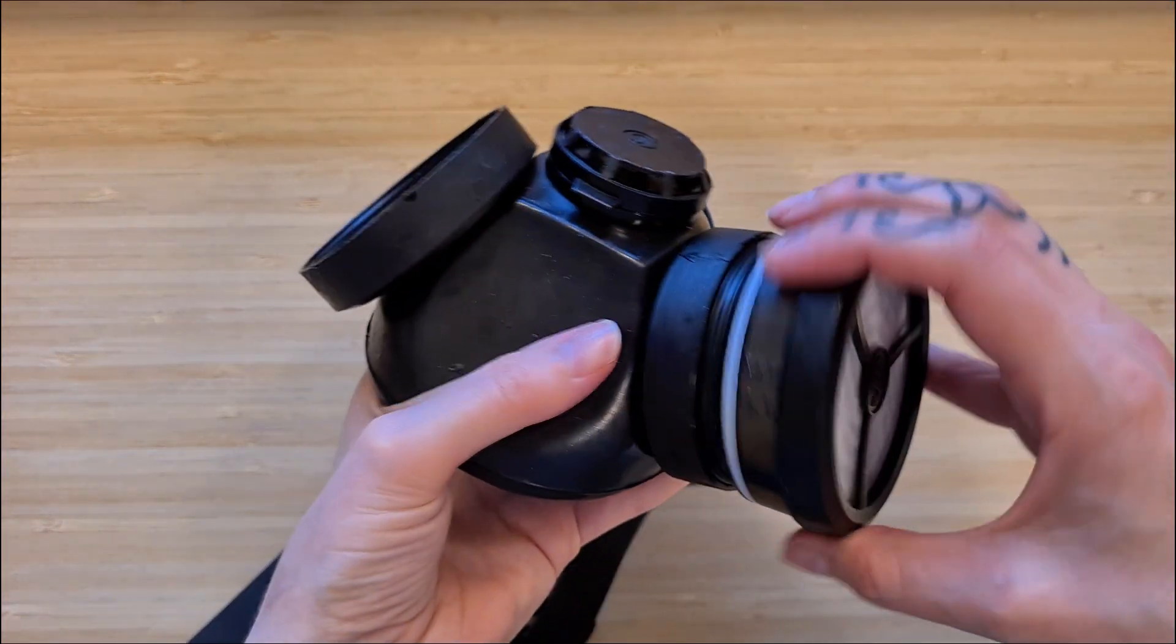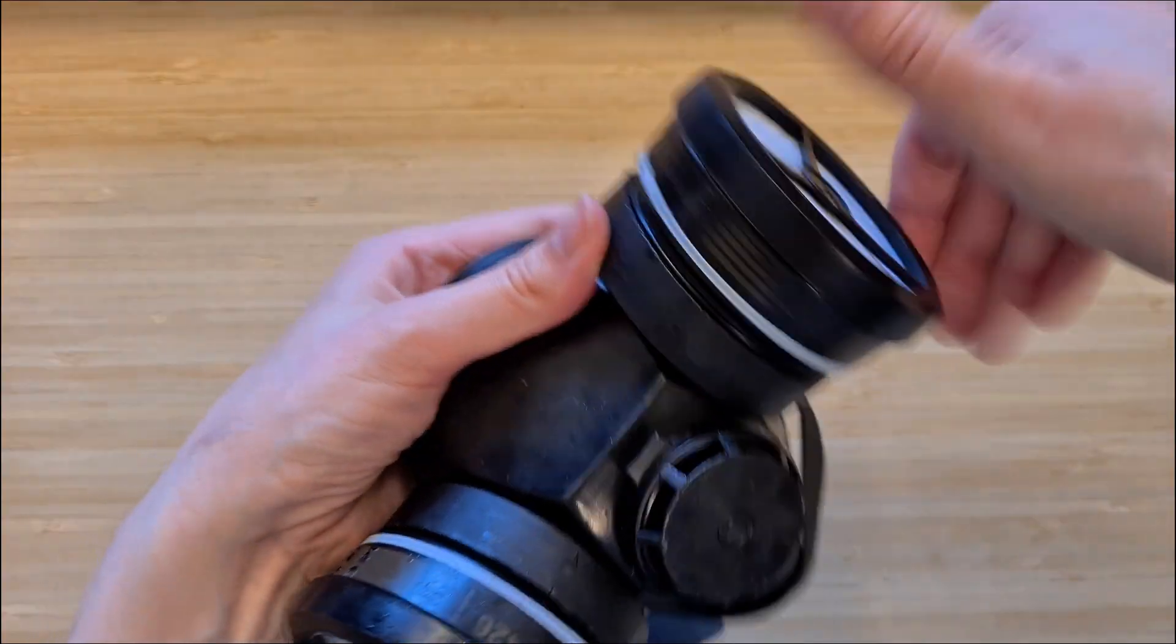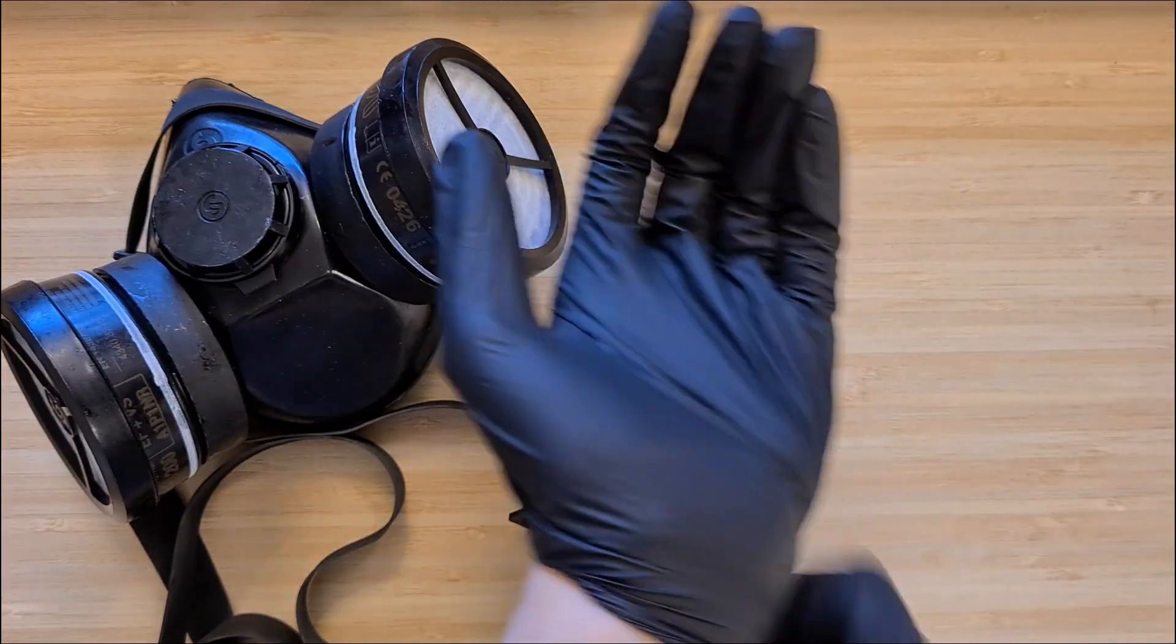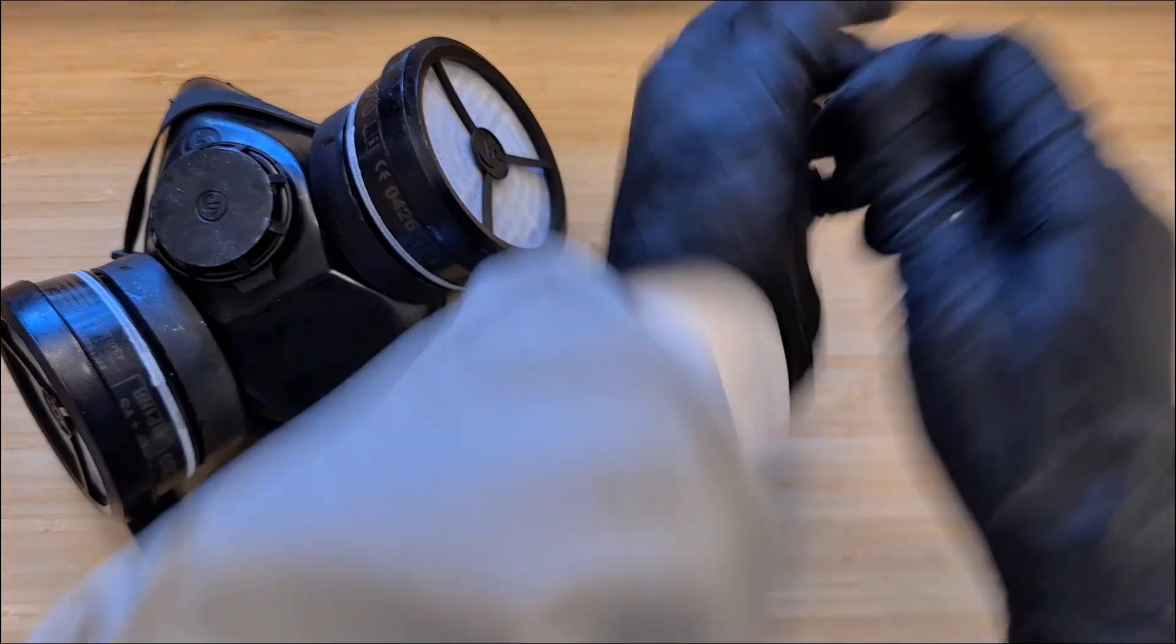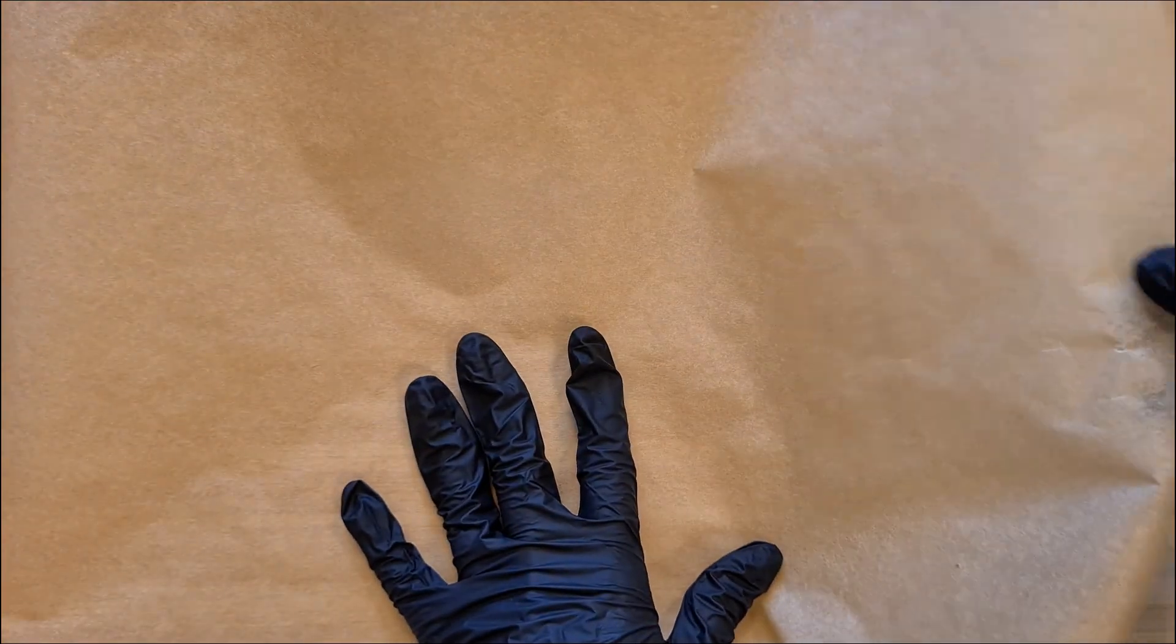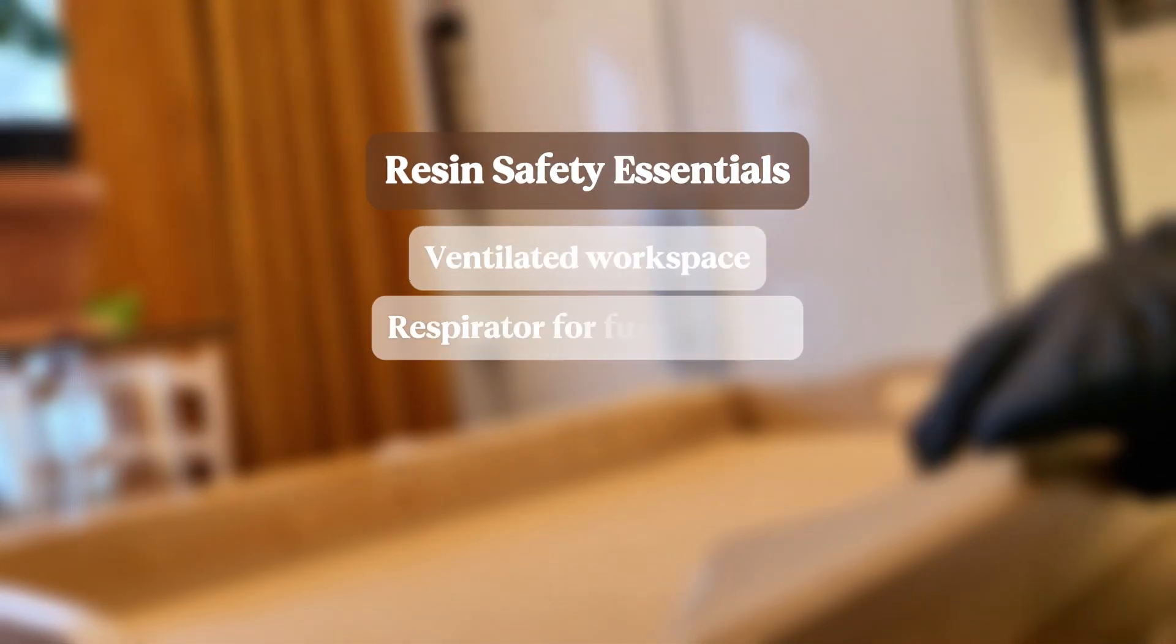Before I start handling resin, I always make sure that I'm well protected, with a respirator to avoid fumes, vinyl gloves to keep resin off my skin, and a protective overall while working in a well-ventilated space. To protect my working area, I cover the table with baking sheet paper, since the resin peels right off once it cures. And here are the very important resin safety essentials.